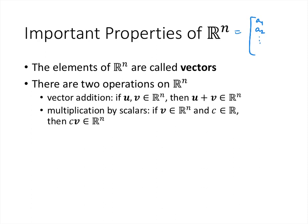so things that look like a1, a2, all the way up through an, where the a's are real numbers. And each of those elements is called a vector, and we've got two operations on ℝⁿ.